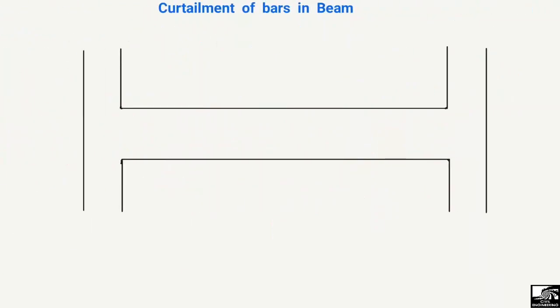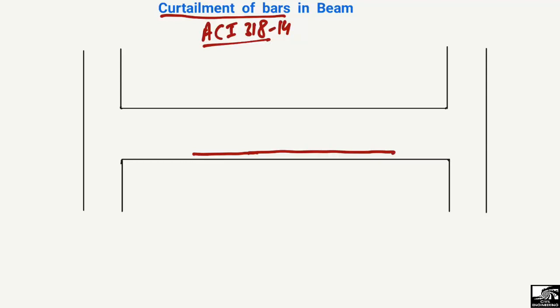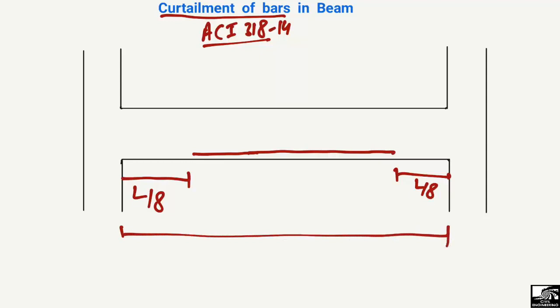Looking at another figure will help clarify the curtailment of bars in beams. I am going to show the curtailment of bars according to ACI 318-14. For positive bending moment, we place tensile bars at the bottom of the beam. ACI says not to provide bottom bars in the end regions — specifically, do not provide positive reinforcement within l/8 from each end, where l is the total length of the beam.